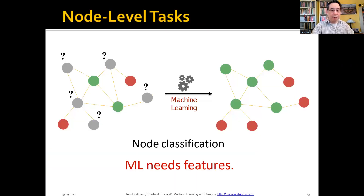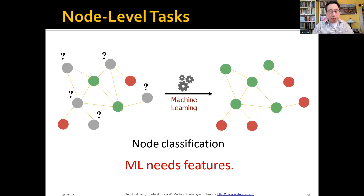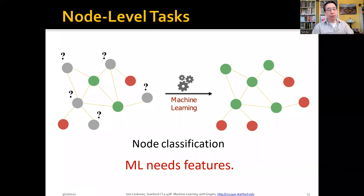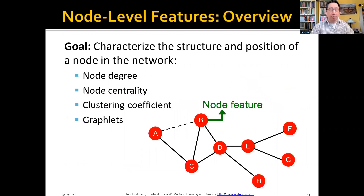The basic idea behind node-level tasks is: you've got a graph and some nodes are labeled — this node is green, that node is red — and you want to label the other nodes. That's a very common problem in graphs. We're going to talk about four different ways to do this: node degree, centrality, clustering coefficient, and graphlets.